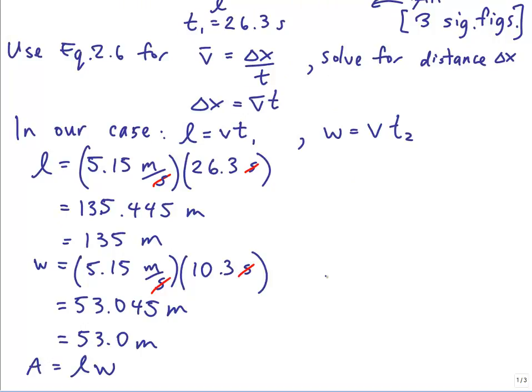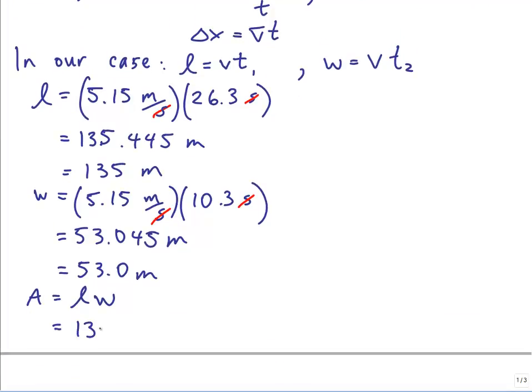Our equation for area is length times width: 135 meters times 53.0 meters. You get 7155 meters squared.